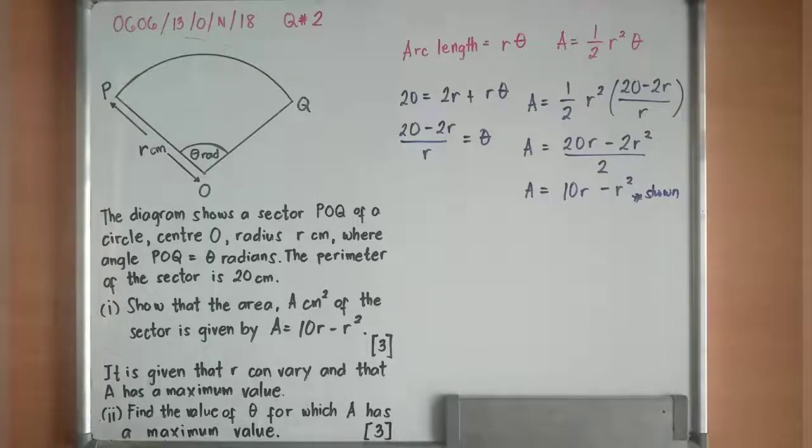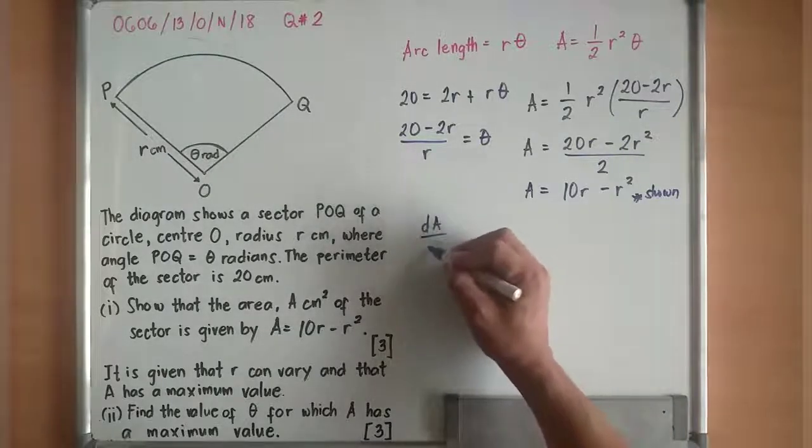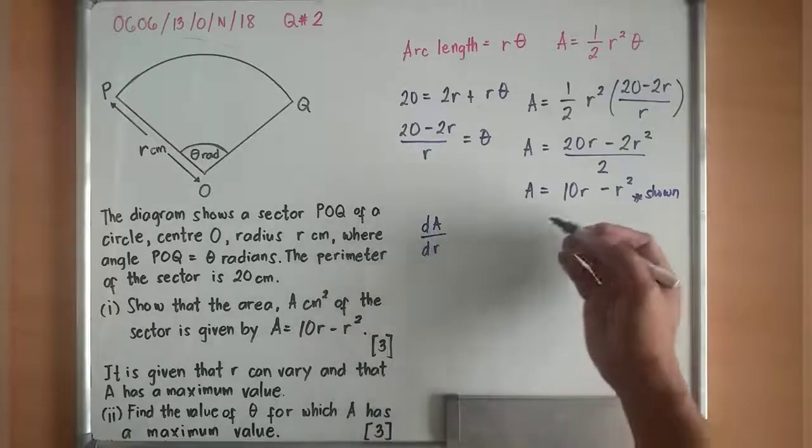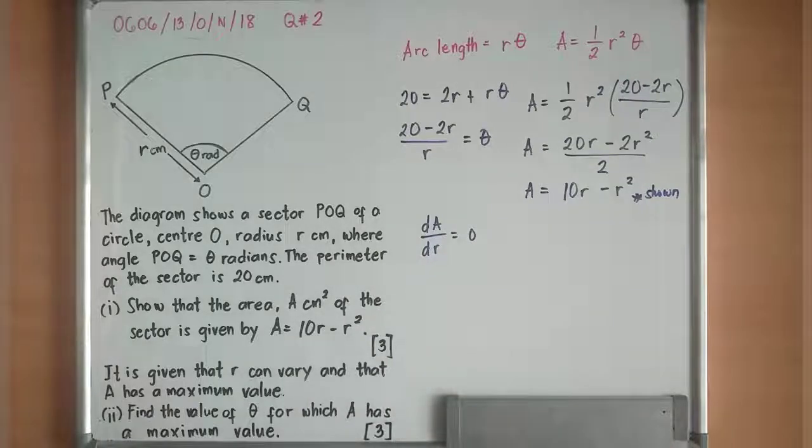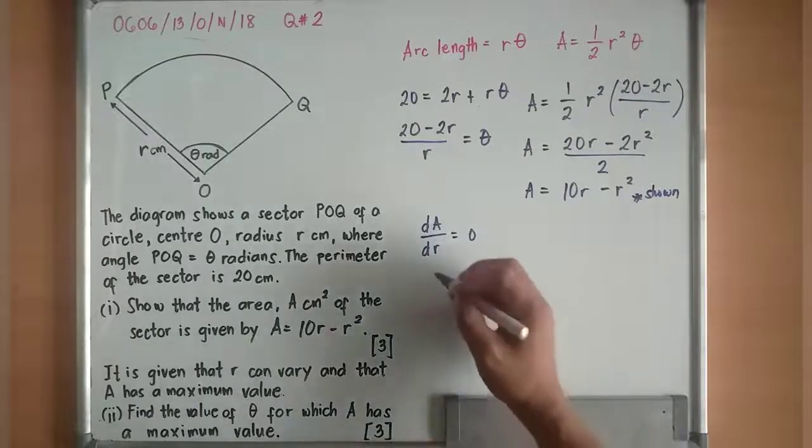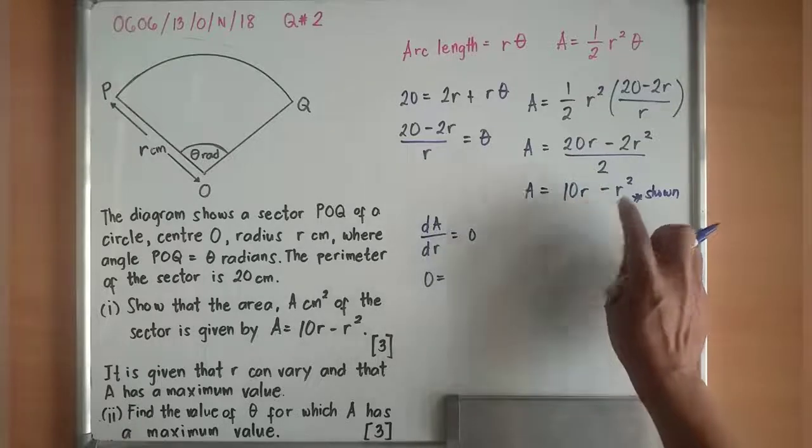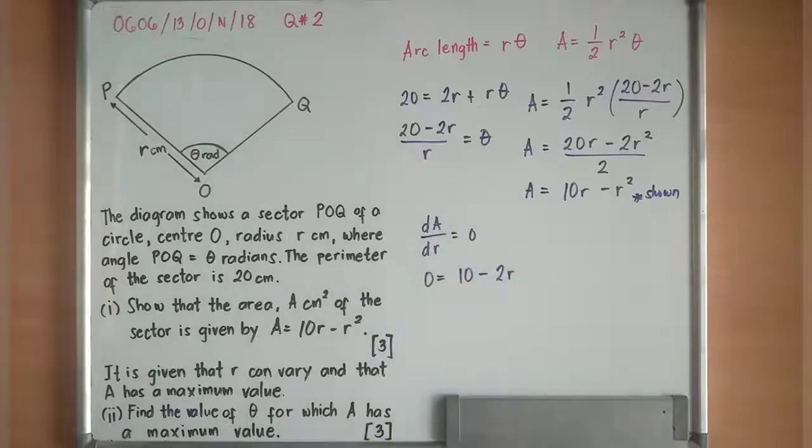When we say stationary point, the gradient is always equivalent to zero. When the gradient is zero, dy/dx equals zero. But here, it's dA/dR, the derivative of A in terms of R. The derivative of A in terms of R equals zero since it's a stationary point. The derivative of 10R minus R squared is 10 minus 2R.